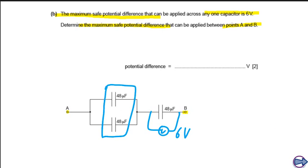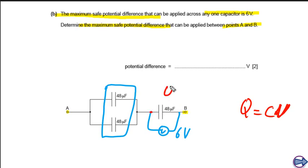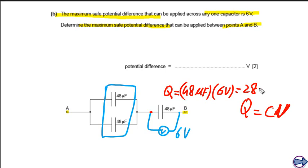To answer this we need to use Q equals CV: the charge on a capacitor equals its capacitance multiplied by the potential difference across it. The voltage across the series capacitor is 6 volts, so the charge on it is 48 microfarads times 6 volts, which equals 288 microcoulombs.